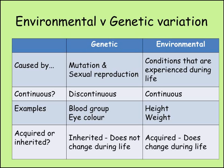Environmental variation is caused by differences in the conditions an individual experiences during its lifetime. This type of variation will usually show a normal distribution, shown by a bell-shaped curve on a distribution graph. Environmental variation is not inherited.